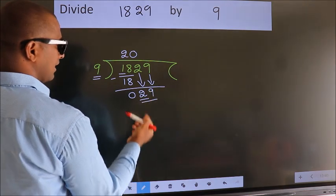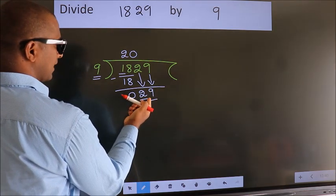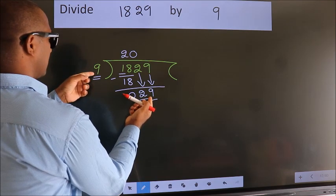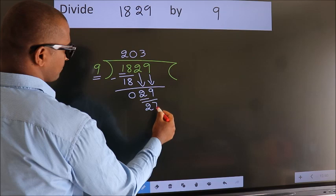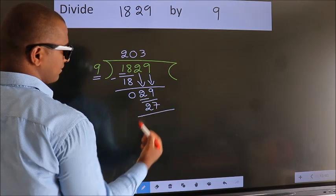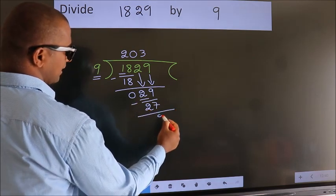So 29. A number close to 29 in the 9 table is 9 times 3 equals 27. Now we subtract. We get 2.